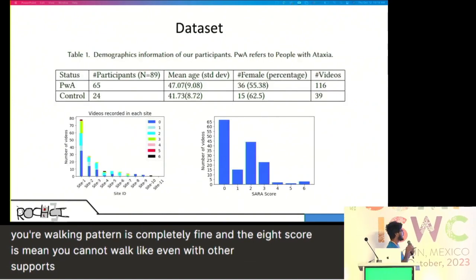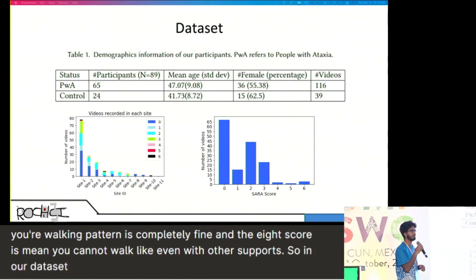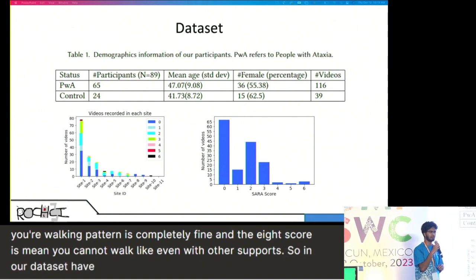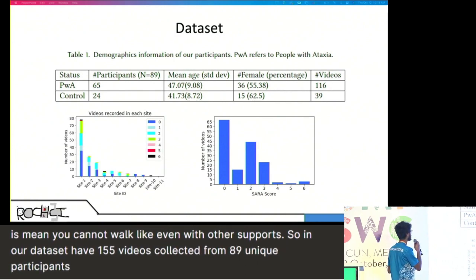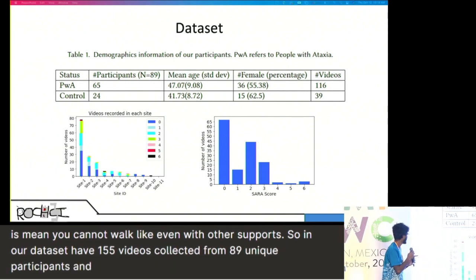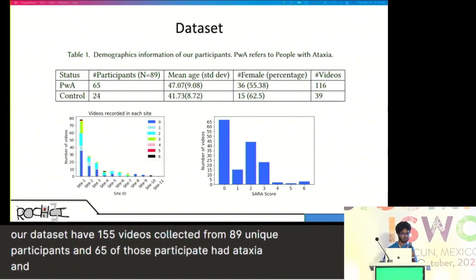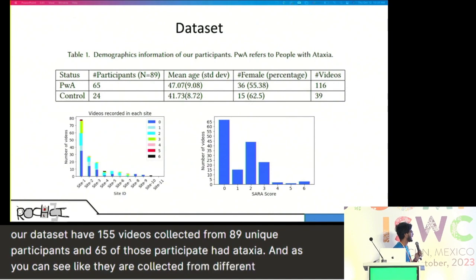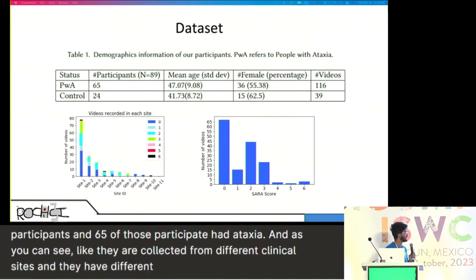In our dataset, we have 155 videos collected from 89 unique participants, and 65 of those participants had ataxia. As you can see, they are collected from different clinical sites and have different SARA scores associated with them.